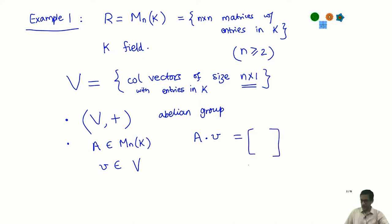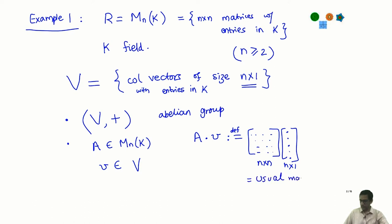There is only one obvious thing we can do: A is an n×n matrix and V is an n×1 matrix or column vector. So we define A·V to be just the usual matrix product of the n×n matrix A with the n×1 matrix V. The result is of course again an n×1 matrix, so again an element of V. This is the definition of the scalar multiplication.